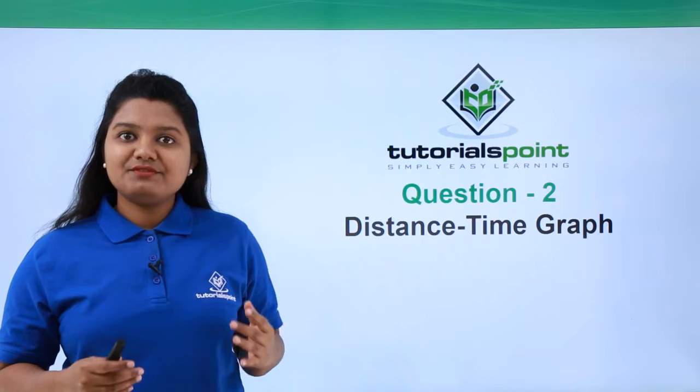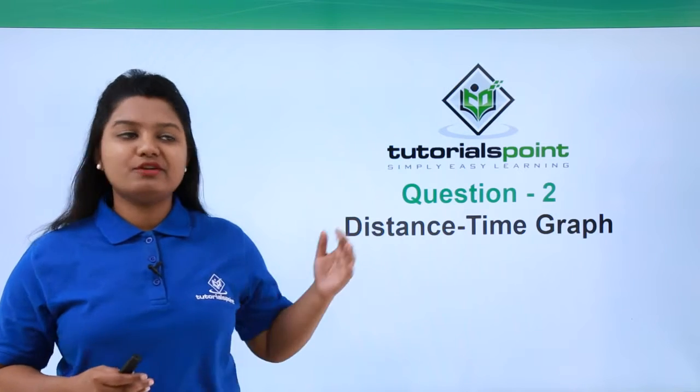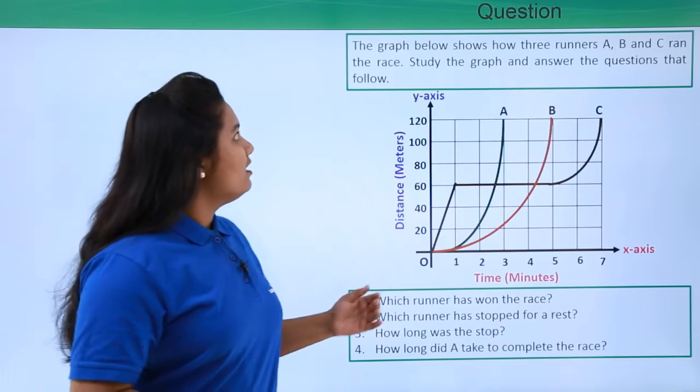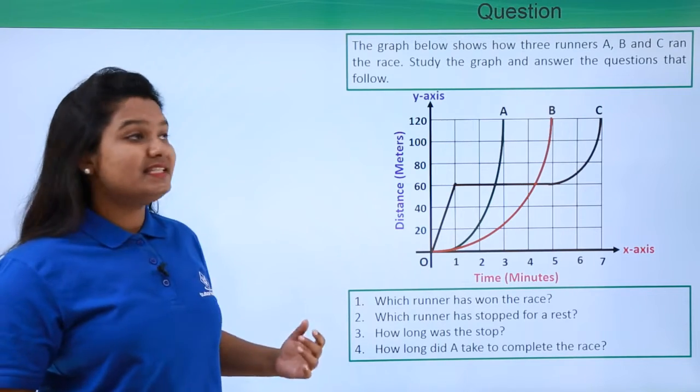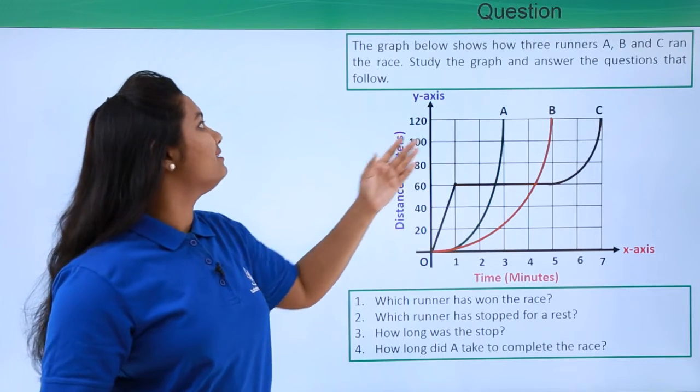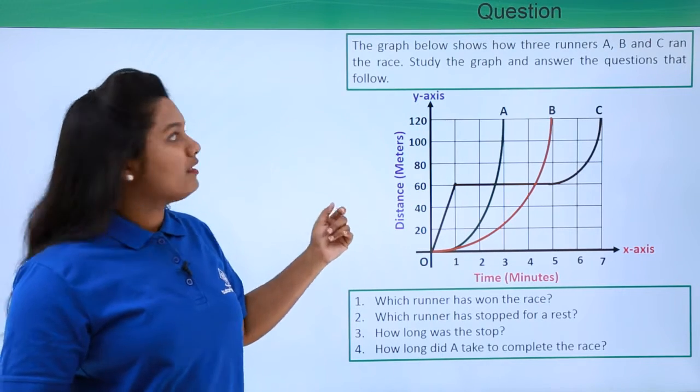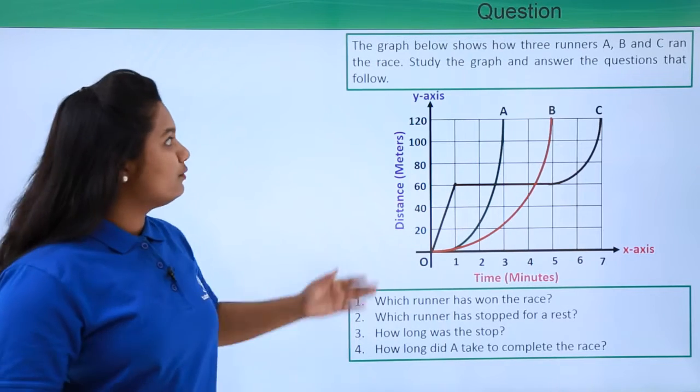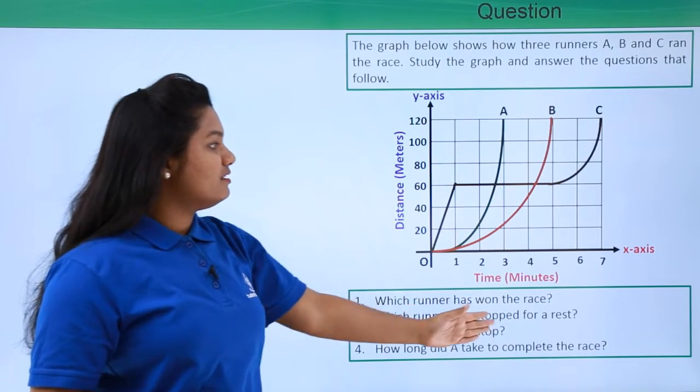Hello everyone, in this video we'll be answering a question based on distance-time graphs. Let's get started. Here is the question which reads: The graph below shows how three runners A, B, and C ran the race. Study the graph and answer the questions that follow.